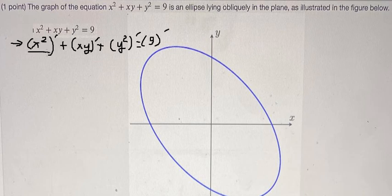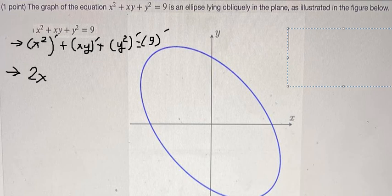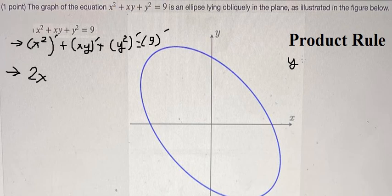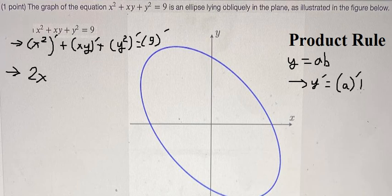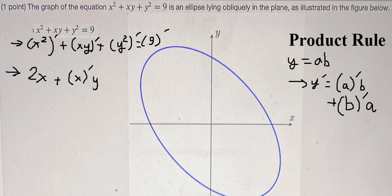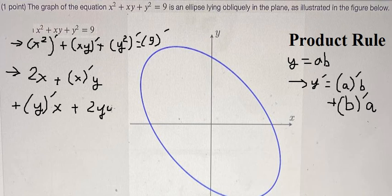If we do the first derivative of x², we have 2x. For this term we apply the product rule of derivatives. It should be like this: we do the first derivative of a multiplied by b, plus the first derivative of b multiplied by a. So for the xy term, we do the first derivative of x multiplied by y, plus the first derivative of y multiplied by x.